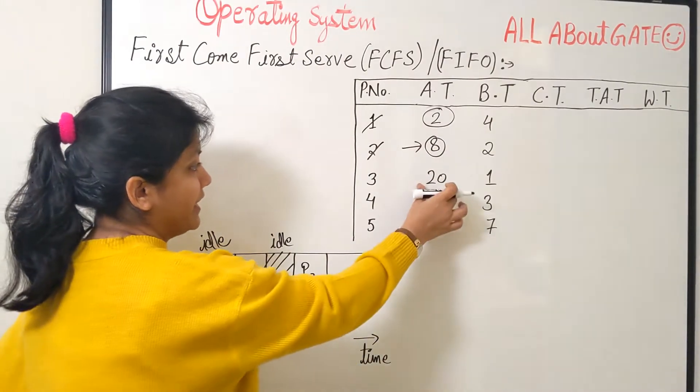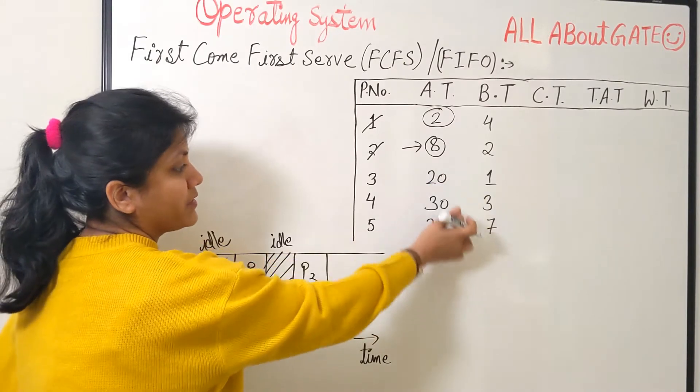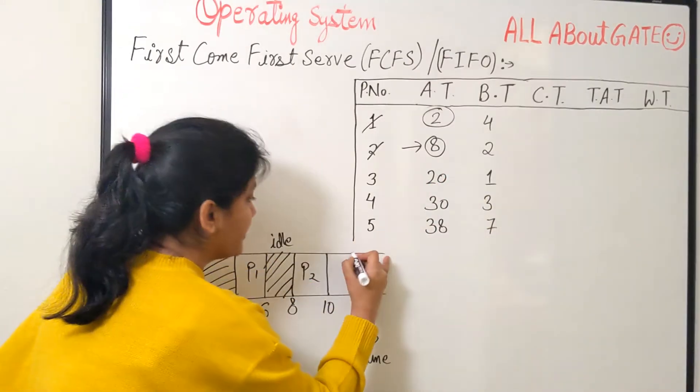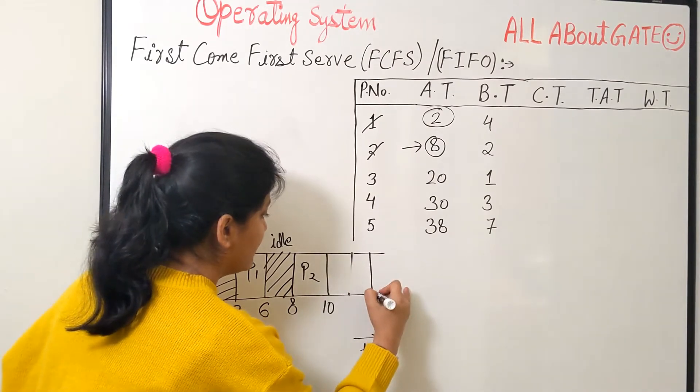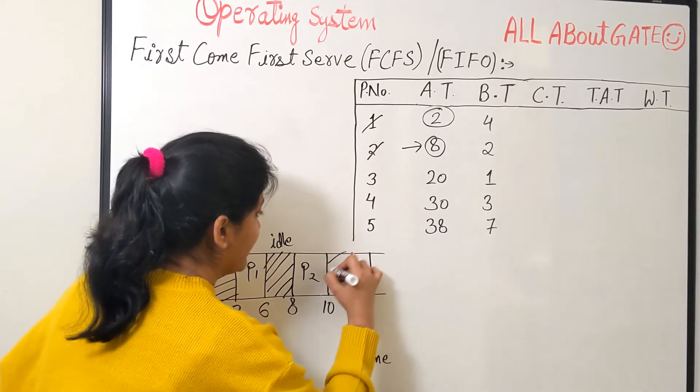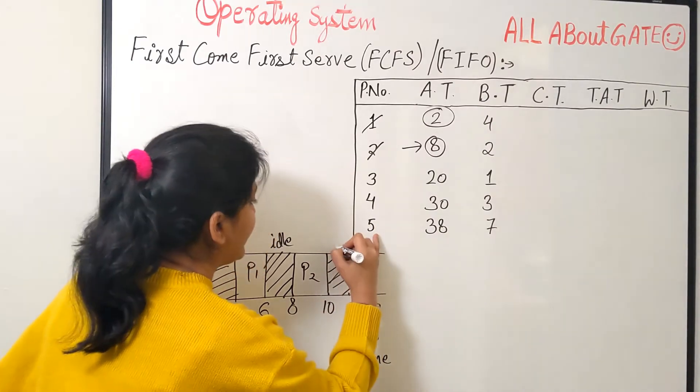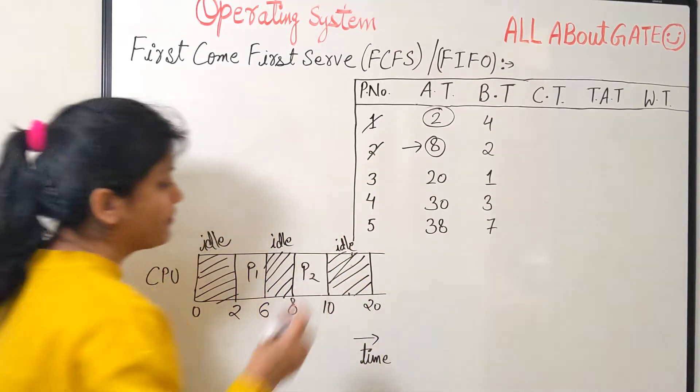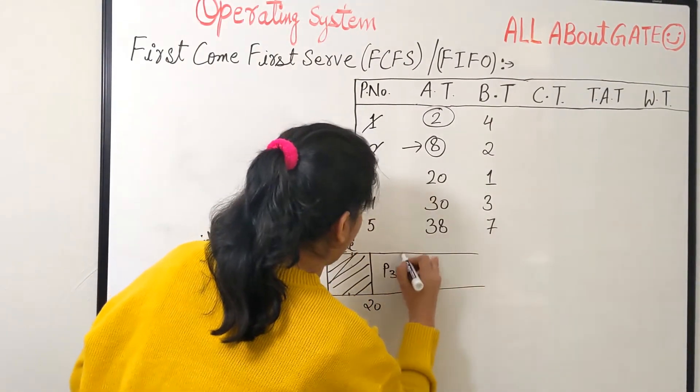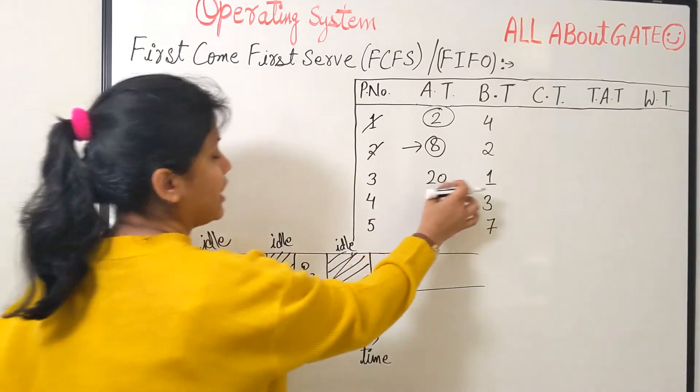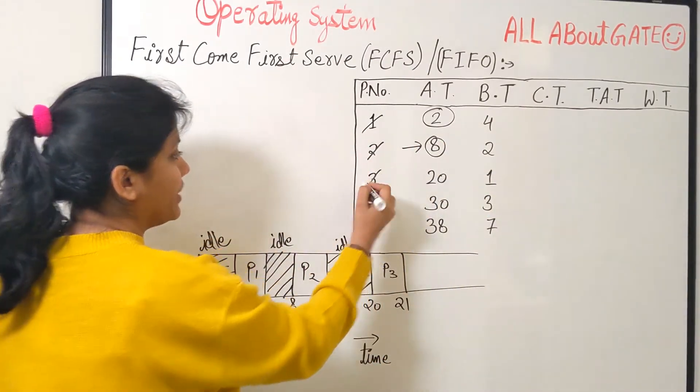Now next process coming at time 20. We have 10 and it is coming at 20. None of the processes are available. So from 10 to 20 once again, it's idle. At time 20 we get another process that is process number 3. So process number 3 needs how much burst? Just 1. So 20 to 21 and the process 3 finished.